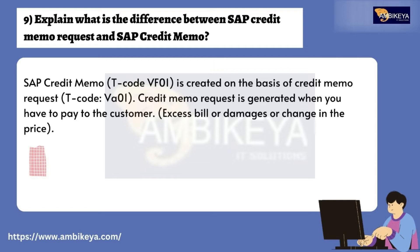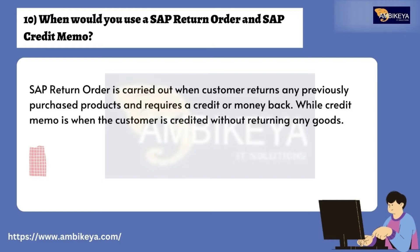Question number nine: Explain the difference between SAP Credit Memo Request and SAP Credit Memo. SAP Credit Memo (T-code VF01) is created on the basis of a Credit Memo Request (T-code VA01). A Credit Memo Request is generated when you have to pay the customer for an excess bill, damages, or a change in price.